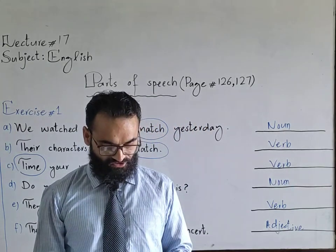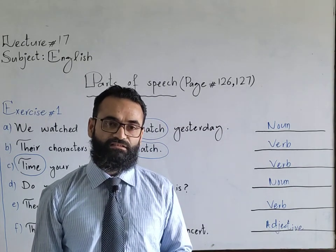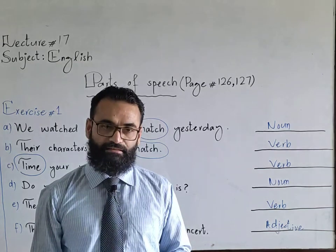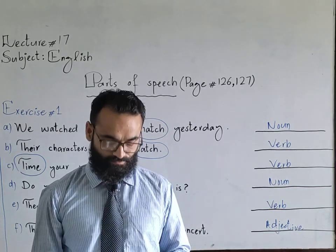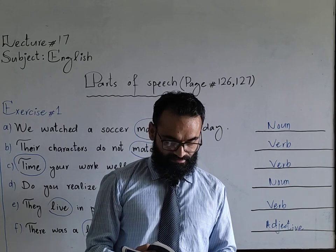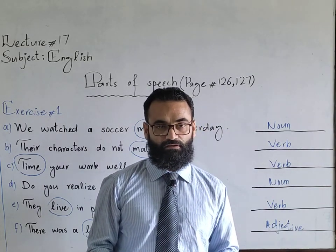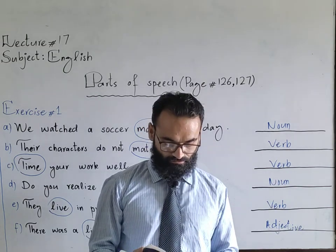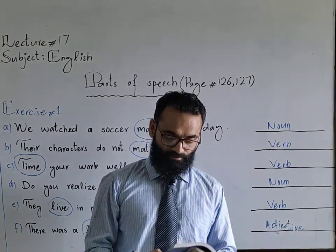Turn to sentence J: 'This is the kind of man I detest.' In this particular sentence, 'kind' is written in bold print, and you have to tell which part of speech it is. It is the name of a thing, so it becomes a noun. Draw a line here and write that 'kind' is used as a noun. Now turn to page 127, exercise number two.